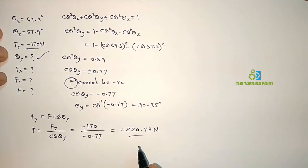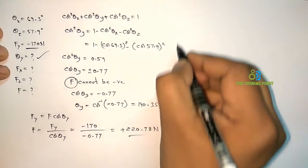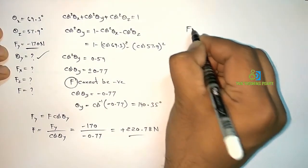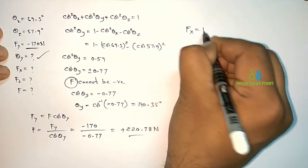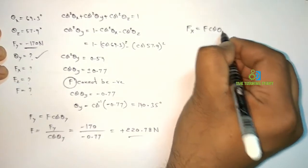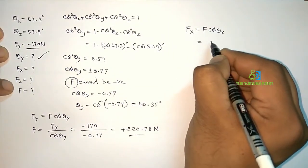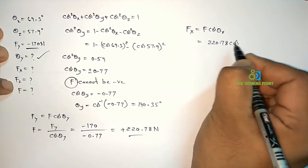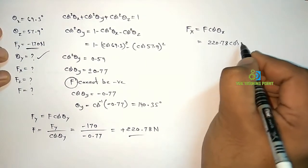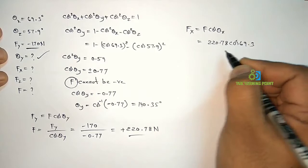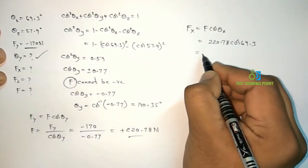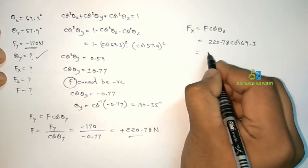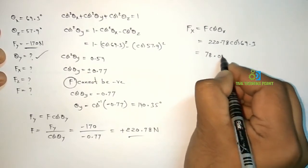Now I want to find Fx and Fz. So to find Fx the relation is, Fx is equal to F cos Theta x. F is 220.78. Cos Theta x is given here, 69.3 degrees. So when I substitute it, I will get the value of Fx.